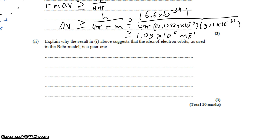Moving on to part three, explain why the results in part one above suggests that the idea of electrons in orbits, as used by the Bohr model, is a poor understanding of how electrons behave.